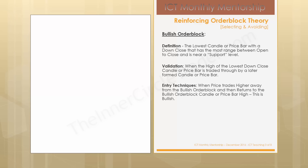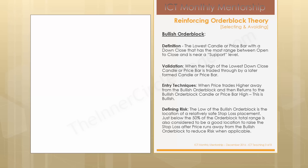Entry techniques using a bullish order block: when price trades higher away from the bullish order block and then returns to the bullish order block candle or price bar high, this is bullish and can be used for a bullish entry. Defining risk with a bullish order block — the low of the bullish order block is the location of a relatively safe stop loss placement. Just below the 50% of the order block total range is also considered a good location to raise the stop loss after price runs away from the bullish order block, to reduce risk when applicable.